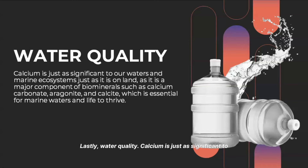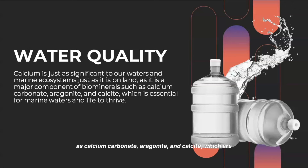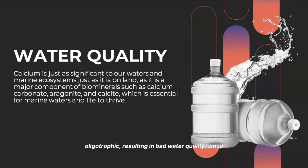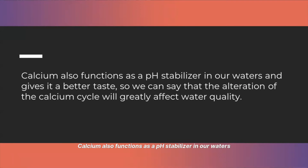And lastly, regarding water quality, calcium is just as significant to our waters and marine ecosystems as it is on land, as it is a major component of biominerals such as calcium carbonate, aragonite, and calcite, which are essential for marine life to thrive. According to a study by De La Rocha, carbon dioxide that causes the alteration of this cycle is depressing the saturation state of seawater with respect to calcium biominerals, affecting the growth of marine organisms. Other than that, bodies of water will become oligotrophic, resulting in bad water quality, since calcium is known to reduce the toxicity of many chemical compounds on fish and other aquatic life. Calcium also functions as a pH stabilizer in our waters and gives it a better taste, so the alteration of the calcium cycle will greatly affect water quality.